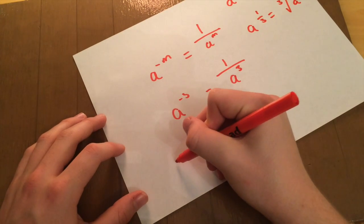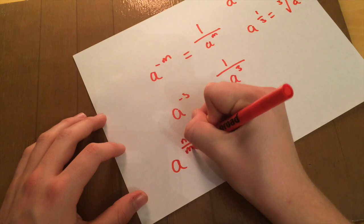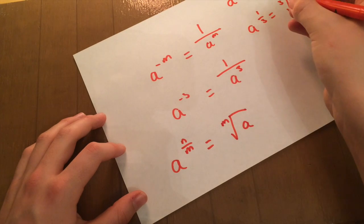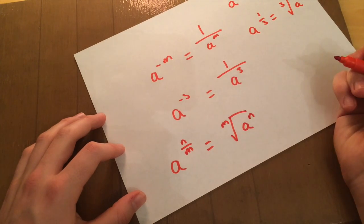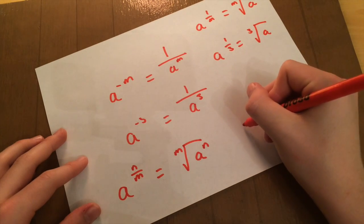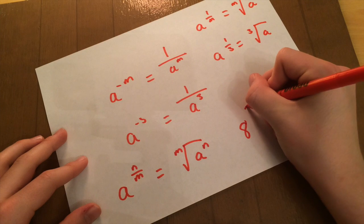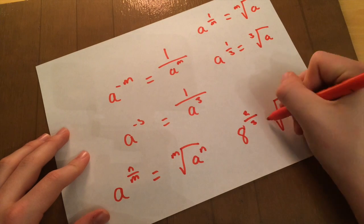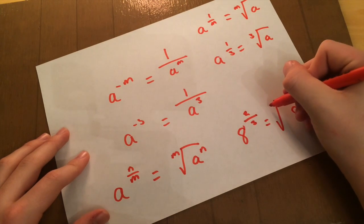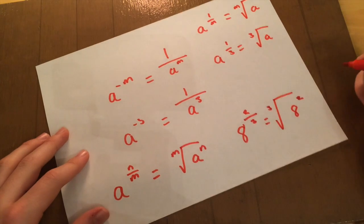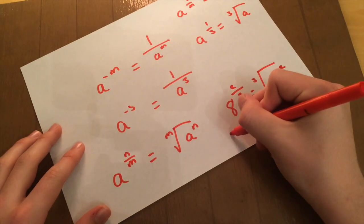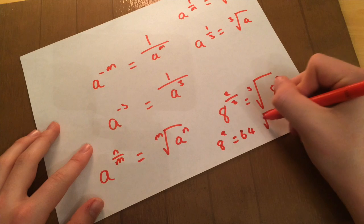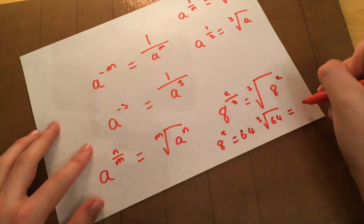Next rule is similar to the last one, but it's A to the N over M. And that is the same as saying root A to the M, like this one up here, but then you've got to stick this to the power of N. So let's just do an example of this. So if we go 8 to the 2 over 3, that is root 8, cube root of 8, squared. And now, so 8 squared equals 64, and then the cube root, which is what we've been left with, of 64 equals 4.